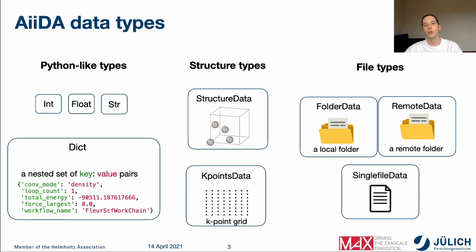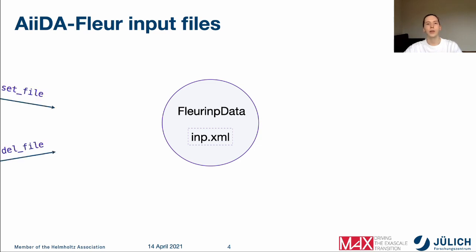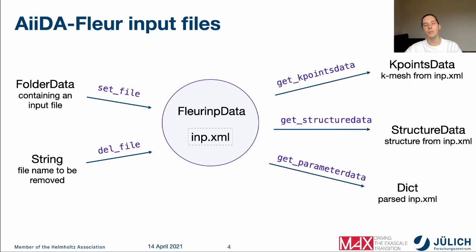Single files can also be represented in AIDA, for example an inp.xml file. However, if you want to work with an inp.xml file, we suggest you use a special data type implemented in AIDA Floor called FloorInpData. FloorInpData basically wraps an inp.xml file and implements a lot of convenient tools to modify it or extract information from it. In all AIDA Floor calculations, you will be using FloorInpData to submit a calculation, or you will start from a structure and construct FloorInpData using the inp.gen calculation.